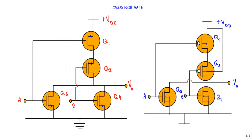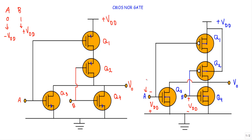Now consider the second case when A is at logic 0 and B is at logic 1. A at logic 0 means I connect the negative terminal of VDD to input A and the positive terminal to ground. B at logic 1 means I connect plus VDD at input B. This applies logic 0 to input A and logic 1 to input B. Since we apply negative voltage at the gate of Q1, which is P-type, Q1 will be ON.